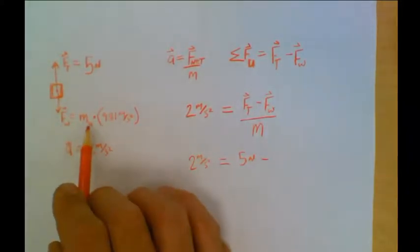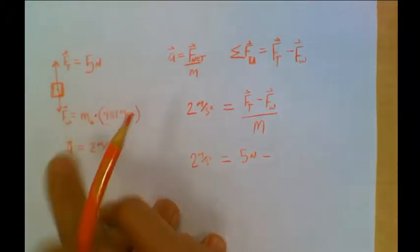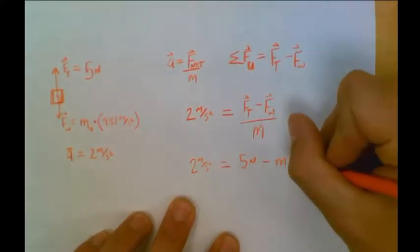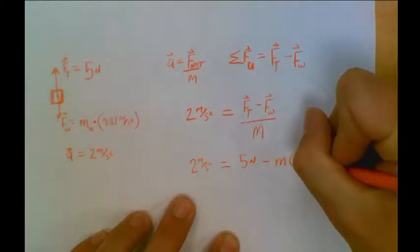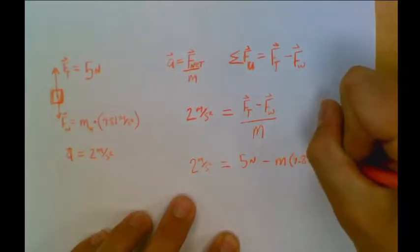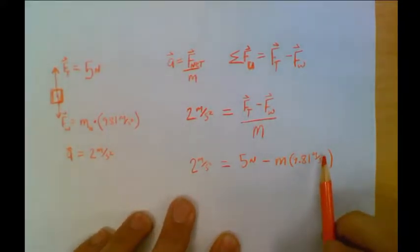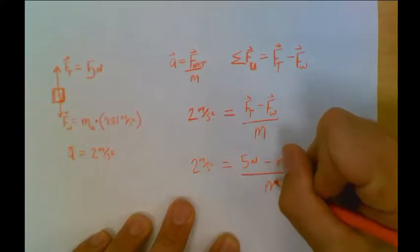Well, we come back and look over here. We said the force of weight was the mass times 9.81. Because weight is mass times 9.81 meters per second squared, because weight is mass times acceleration due to gravity, divided by the mass.